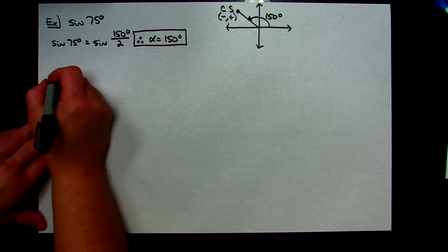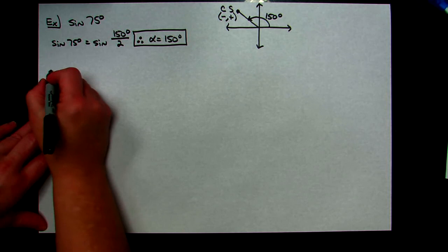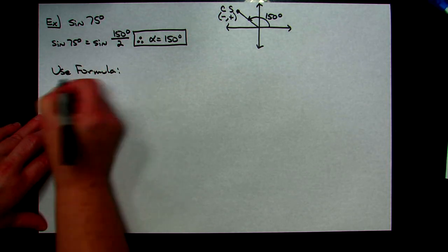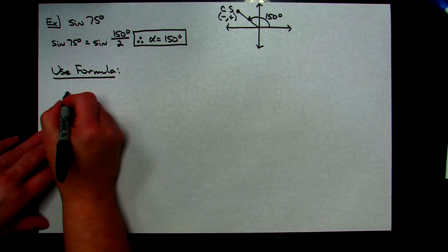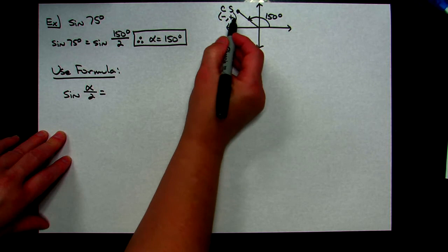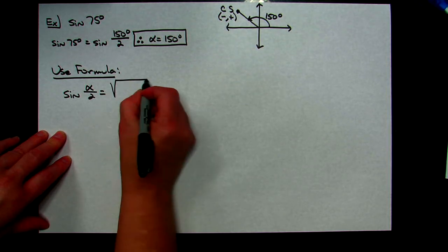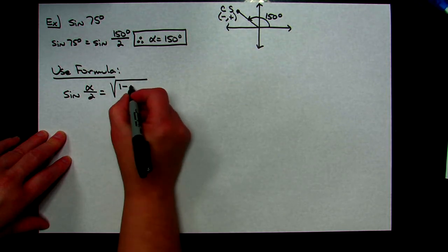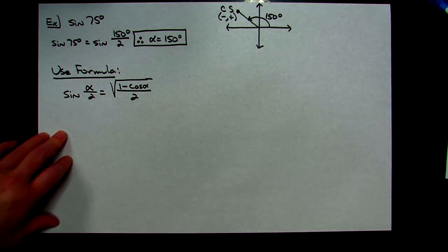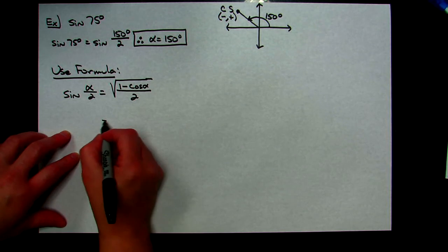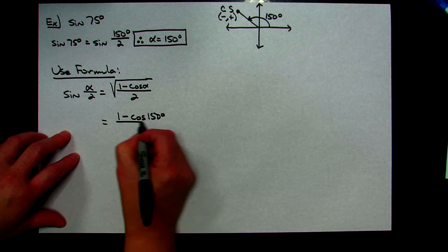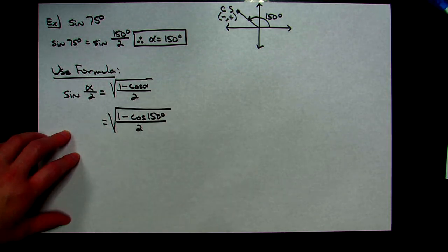We have everything we need — alpha and the sign — so we can go straight to the formula. Rewriting: sine(α/2) = positive square root of (1 − cosine α) all over 2. Plugging in alpha = 150°: square root of (1 − cosine 150°) all over 2.